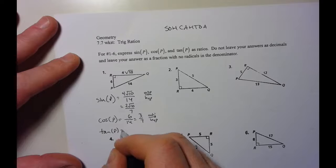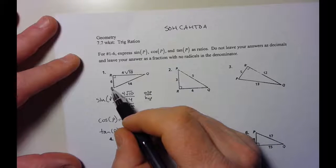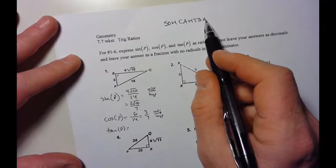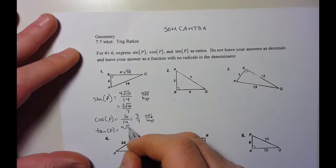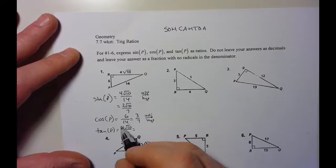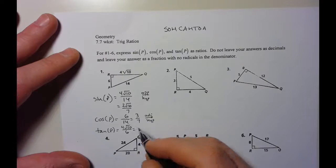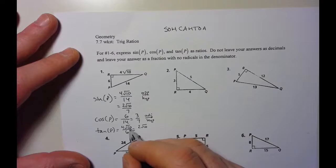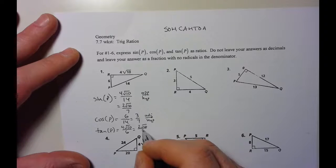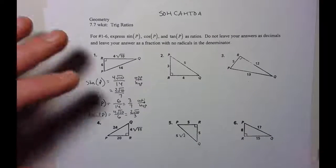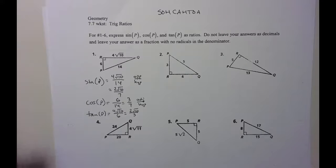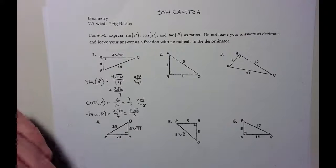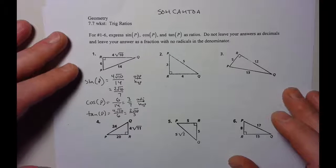For the tangent of p, tangent is opposite over adjacent. So tangent of p is 4√10 over 6. I can reduce that by taking 2 out of both coefficients — remember you can't divide the radicand, only coefficient from coefficient — so it stays as 2√10 over 3. All of these are basically the same; you're just going to go through and set up those ratios.